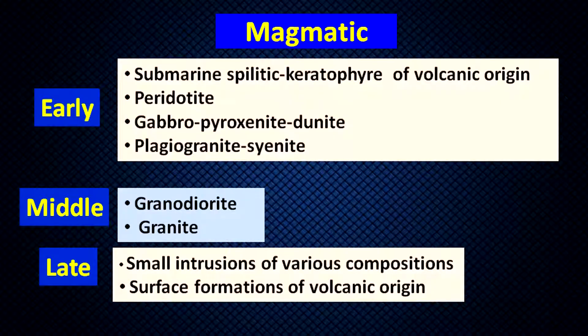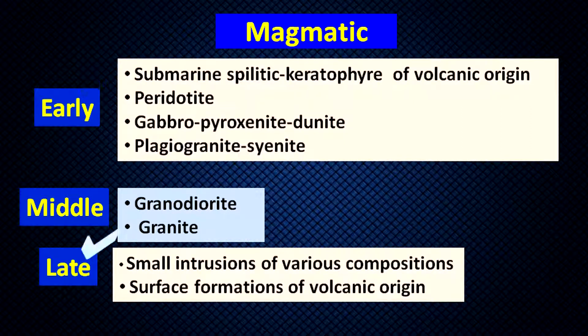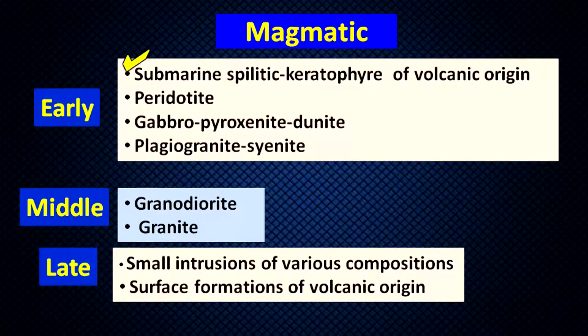First, I will deal with the magmatic deposits. Magmatic deposits can further be classified or grouped into early, middle, and late stages. In case of early magmatic deposits, the first process is submarine, spilite, keratophyre, or volcanic origin.